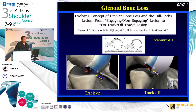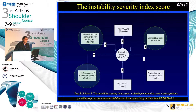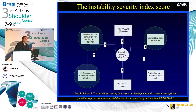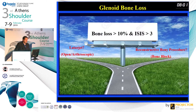Even a smaller glenoid bone defect, if it is bipolar, is really associated with significant instability. Thanks to Pascal Boileau, we also know we have to consider the ISIS score — it may not be universally accepted, but I think it gives us a good indication of the risk of recurrence.